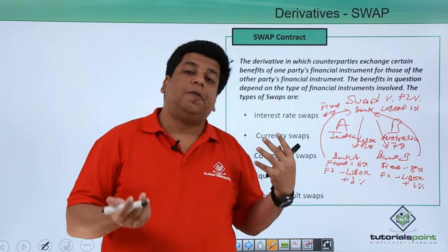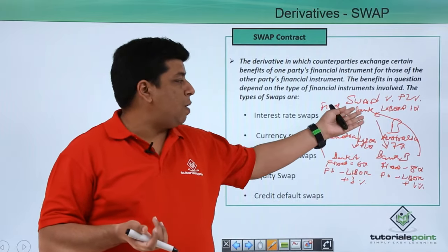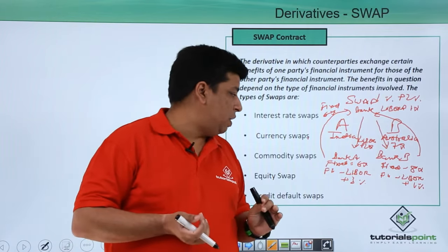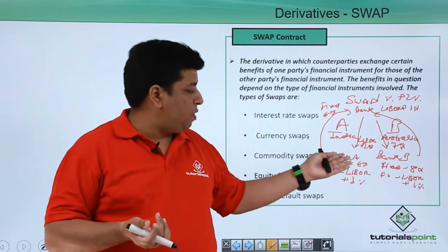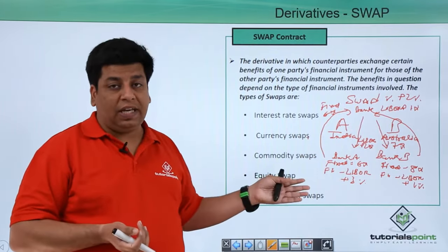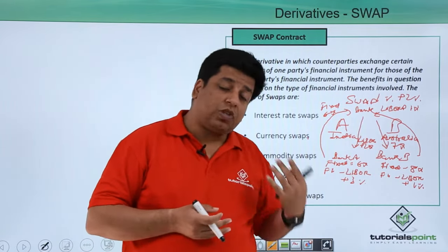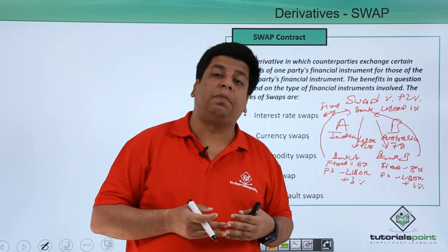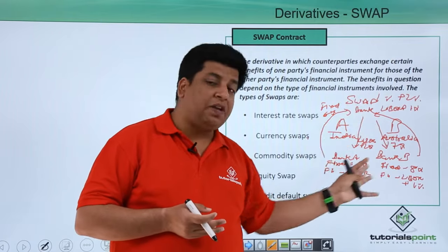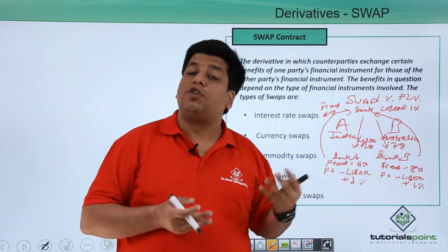Without investing anything, just by facilitating a swap of interest rate, a swap bank is making a profit of 3%. Company A is able to save 1%, and similarly company B has also managed to save 1%. So all the three parties are benefited by this kind of agreement or contract. This is known as swaps.